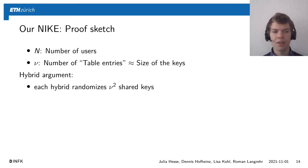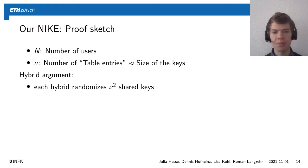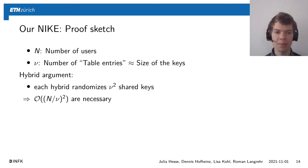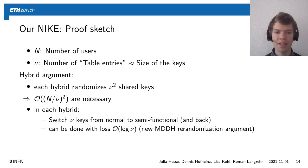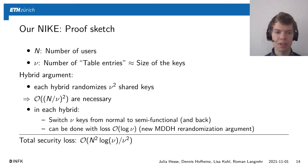To prove security of our NIKE, let N be the number of users and ν be the size of the table entries (roughly the key size). We apply a hybrid argument: in each hybrid we change ν normal keys to semi-functional keys, thereby randomizing ν² shared keys. Thus O(N/ν²) hybrids are necessary. We need to switch ν keys from normal to semi-functional and back, which can be done with security loss only O(log ν) due to a new MDDH randomization argument we give. This leads to a total security loss of N²·log(ν)/ν².